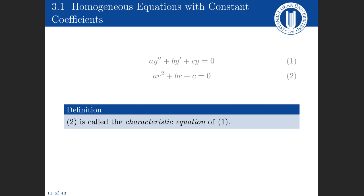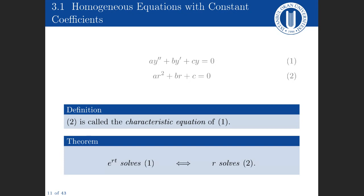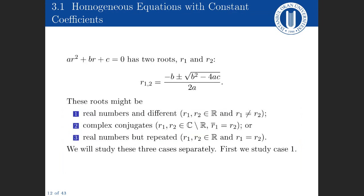This quadratic — equation two — is called the characteristic equation of equation one. The function e to the power rt solves the differential equation if and only if r solves the characteristic equation. The characteristic equation has two roots r1 and r2. There are three possibilities: two different real numbers, complex conjugates, or a repeated real number. We need to study these three cases separately.